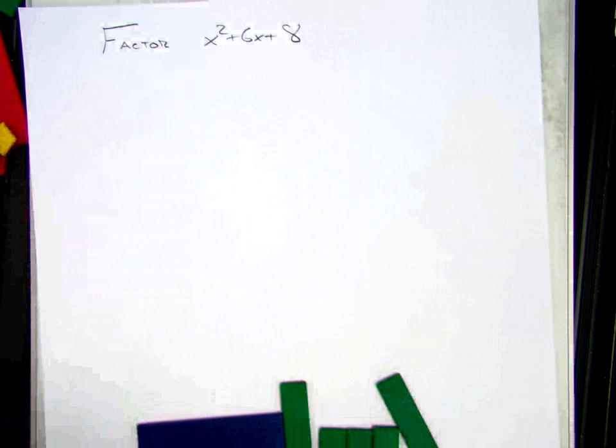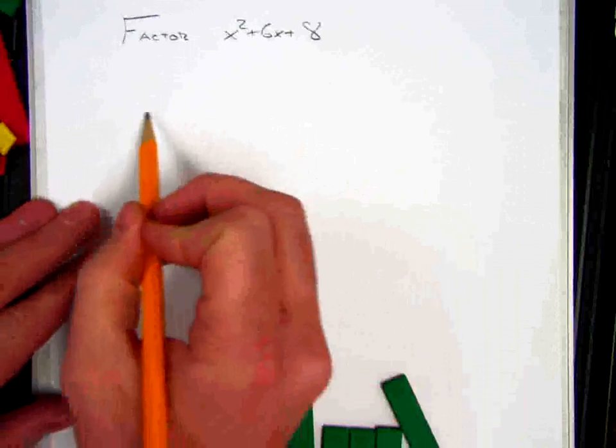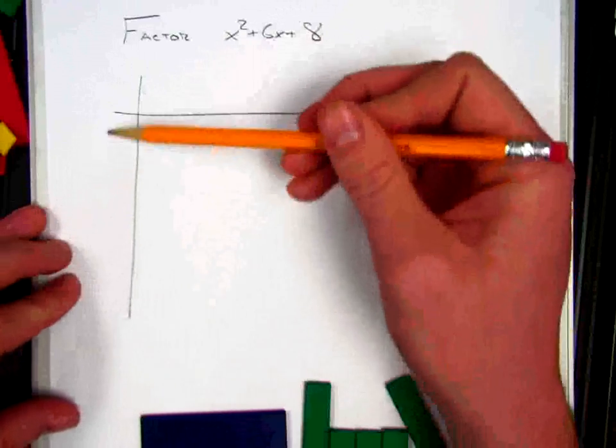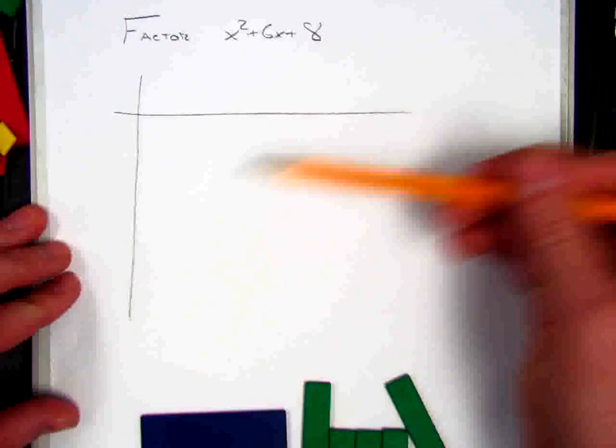So I'm going to start by referencing that. When we multiply with algebra tiles, I would make a chart like this, and one of my factors would go here, one of my factors would go here, and my product went in the middle.